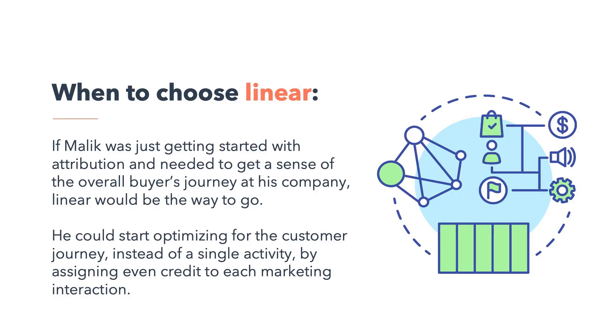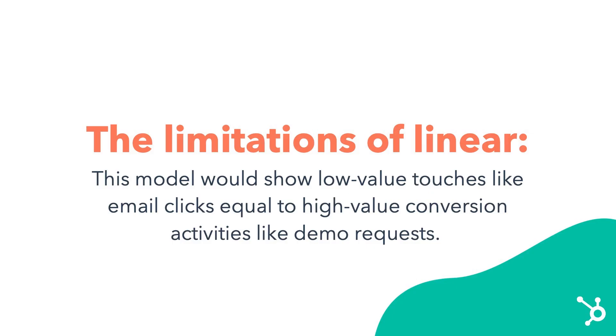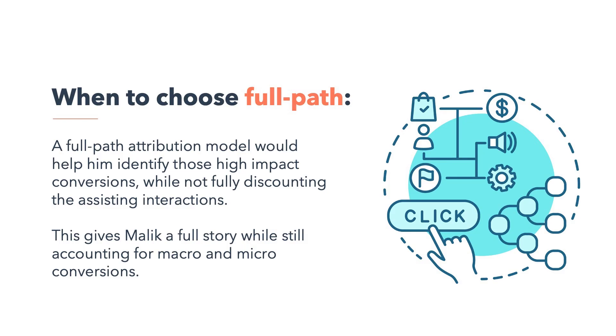This leaves us with either linear or full path. If Malik was just getting started with attribution and needed a sense of the overall buyer's journey, linear would be a great way to go — he could start optimizing for the entire buyer's journey by assigning credit evenly to each marketing interaction. But linear attribution has its limitations, because not every interaction equally propels a customer toward purchase; it would show low-value touches like email clicks as equal to high-value activities like demo requests. As an operations manager, Malik needs to help his teams optimize for particular outcomes, so a full path attribution model would help him identify those high-impact conversions while not discounting the assisting conversions. This gives Malik a full story while still accounting for macro and micro conversions.